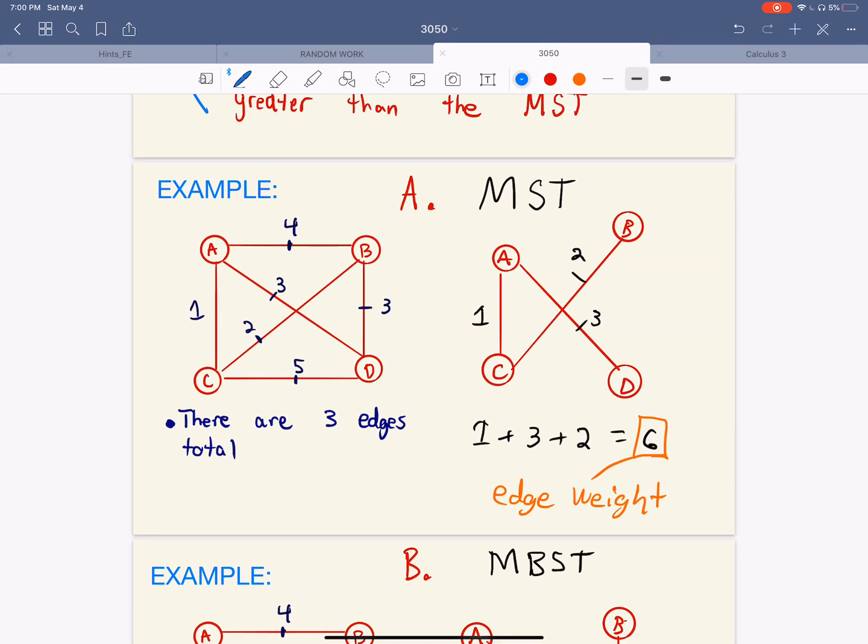So here's a graph, and the minimum spanning tree is right here. So the first thing we want to look at here is there's three edges. So here's one edge, here's two edge, here's three edges.